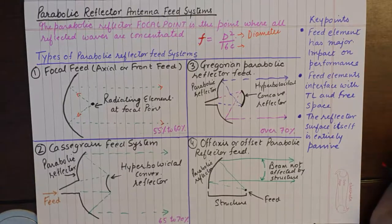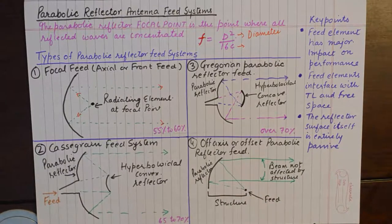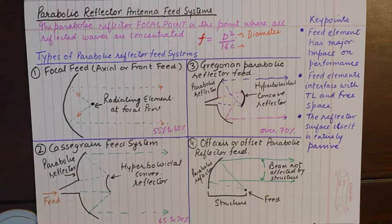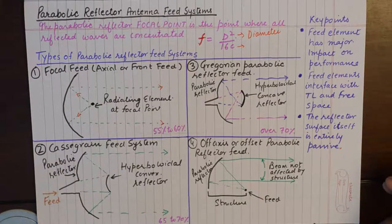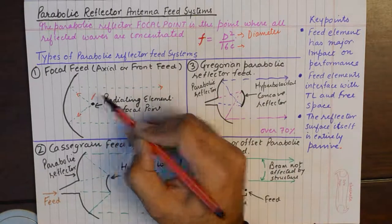The feed element is the one which interfaces with the transmission line and free space, because the feed element is the active element in this antenna system. It is responsible for receiving the signal from the transmission line and sending it into the air. The reflector surface itself is entirely passive — it is a parasitic element that only manipulates the radiations radiated by the feed system placed at the focal point.